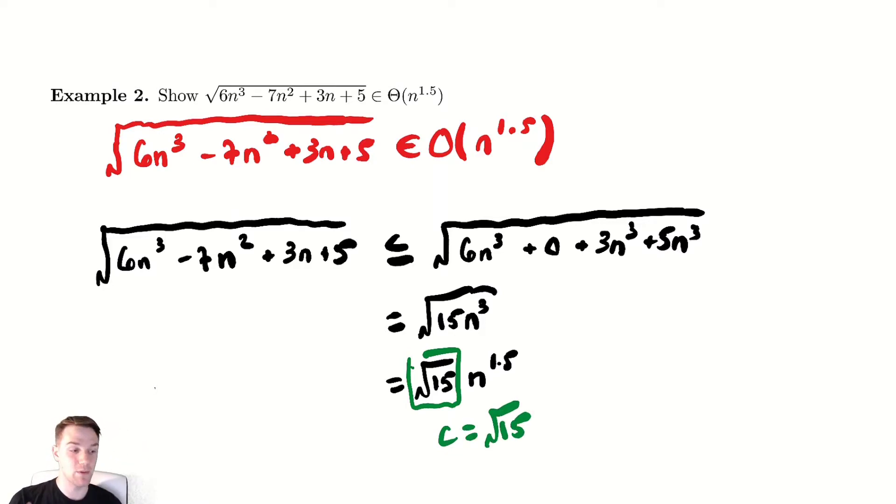And the one claim we made that was slightly spurious is that 5 is less than or equal to 5n cubed. That's only true once n is equal to 1 or greater. So we have an n naught here of 1.